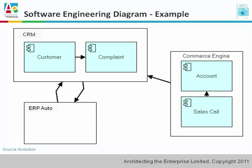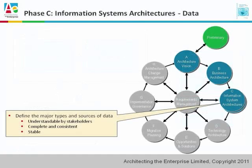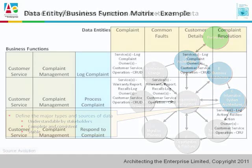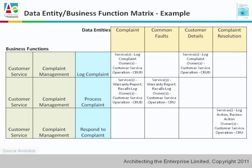The software engineering diagram shows how our applications decompose — very useful for software architects and developers. For our data architecture, we might build a data entity to business function matrix, where we have our data entities across the top and our business functions along the side. In the cells, we show the business services, the owners, and also the operations that can be carried out: create, read, update, delete.